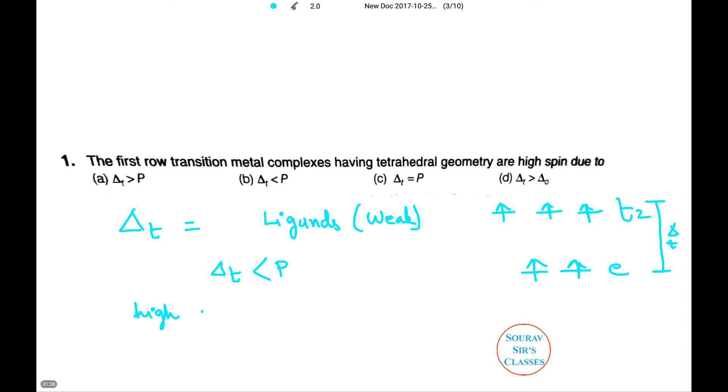So high spin complex equals more number of unpaired electrons. Since we have more unpaired electrons in case of tetrahedral complexes, Δt is less than P and hence option B is the correct answer.